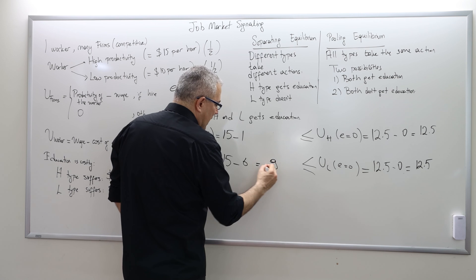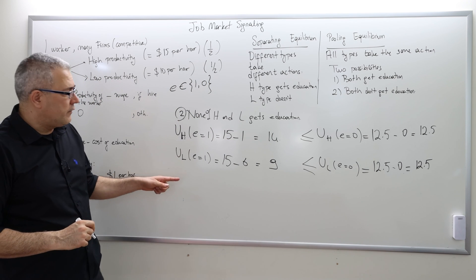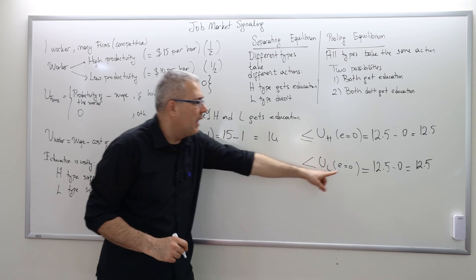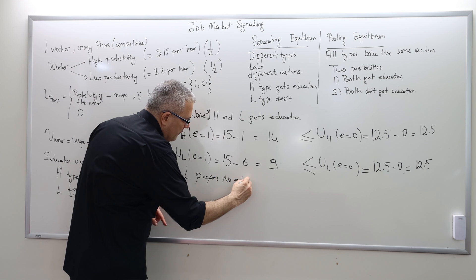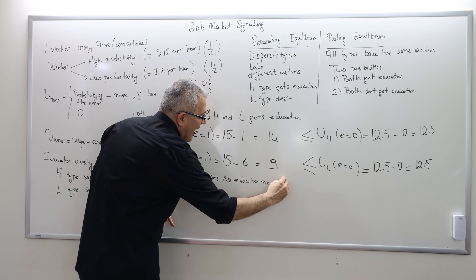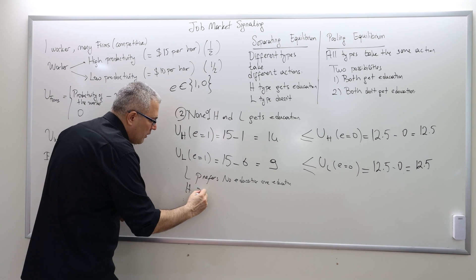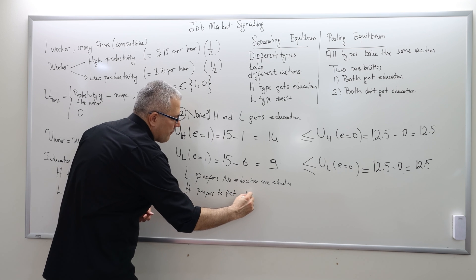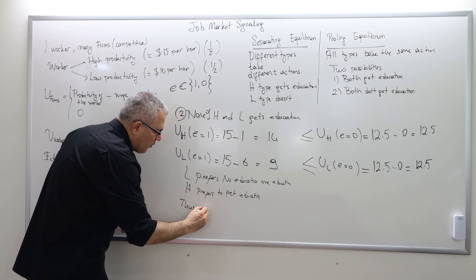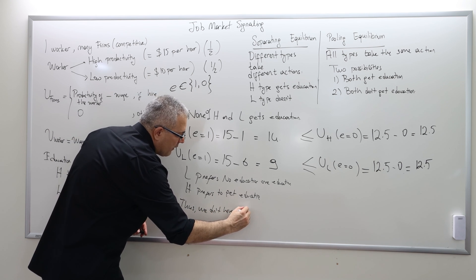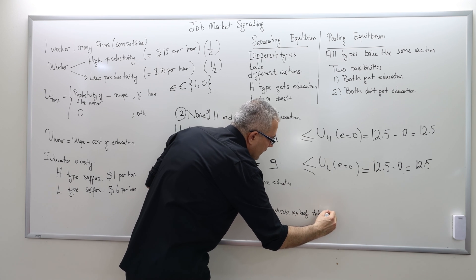If the low type mimics the high type by getting education, the salary is $15 but the cost is $6, giving net utility of $9. For the high type it would be $14. So the low type is super happy with no education (12.5 > 9) — the low type prefers no education over education. However, the high type prefers to get education because $14 is higher than $12.5. Therefore, we do not have a pooling equilibrium in which nobody takes an education.